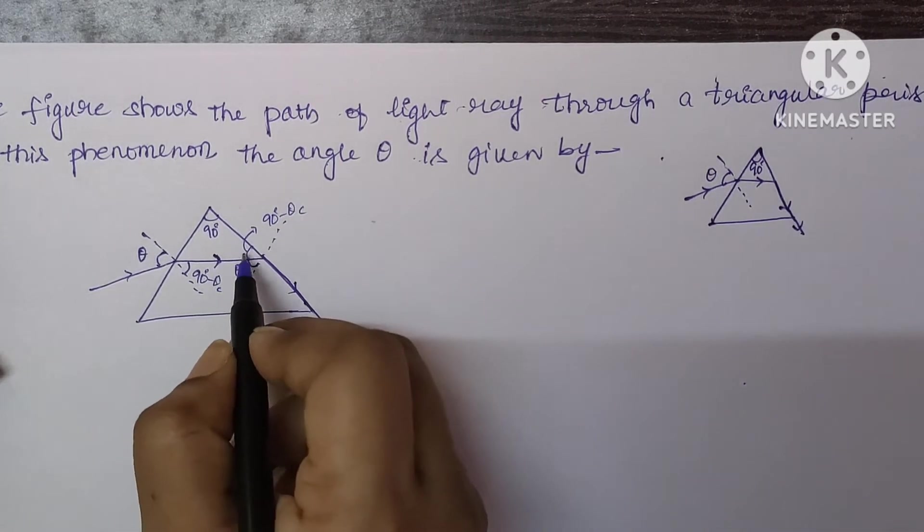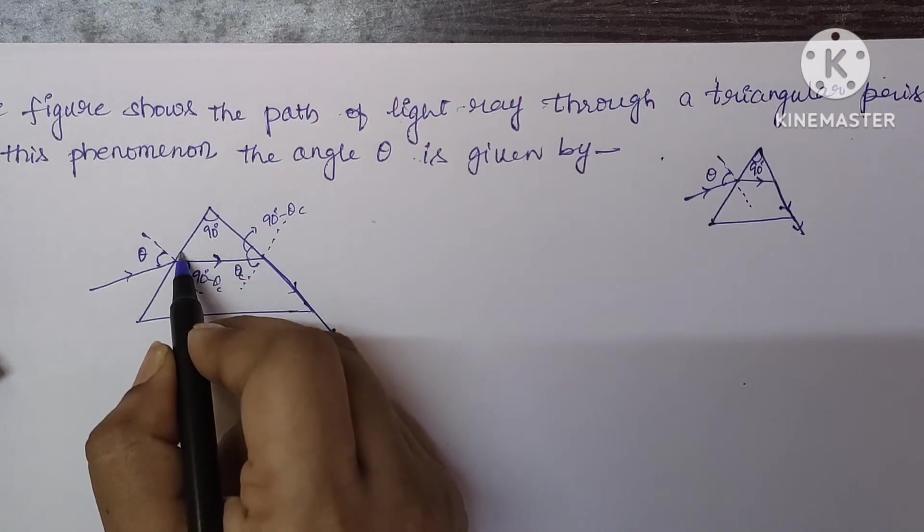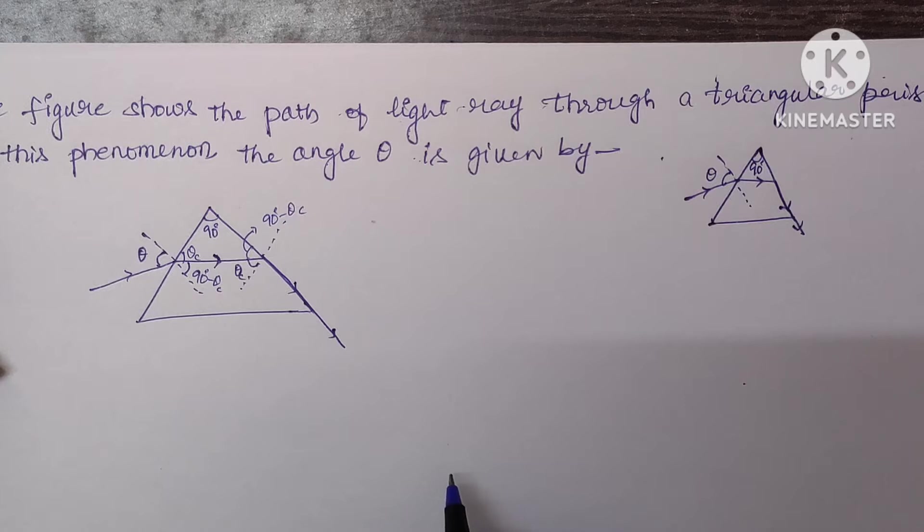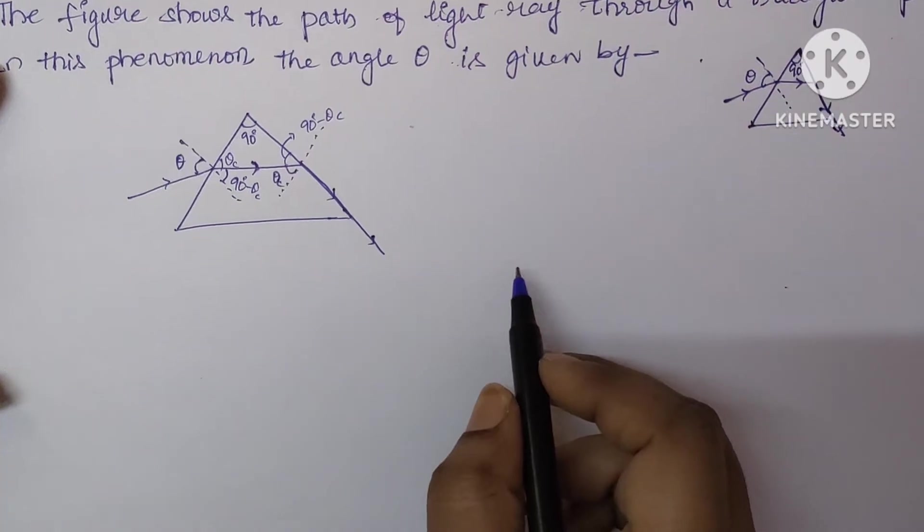If this is 90 minus theta c and this is 90, this is going to be theta c. Now, our aim is to find out what is the value of theta. Let's see for that.